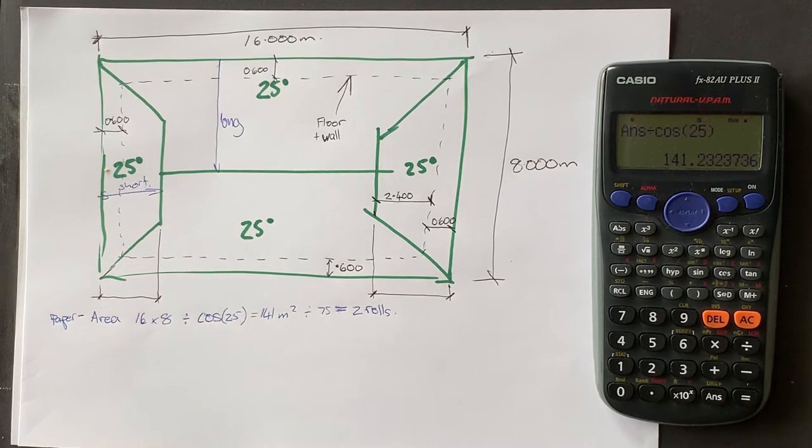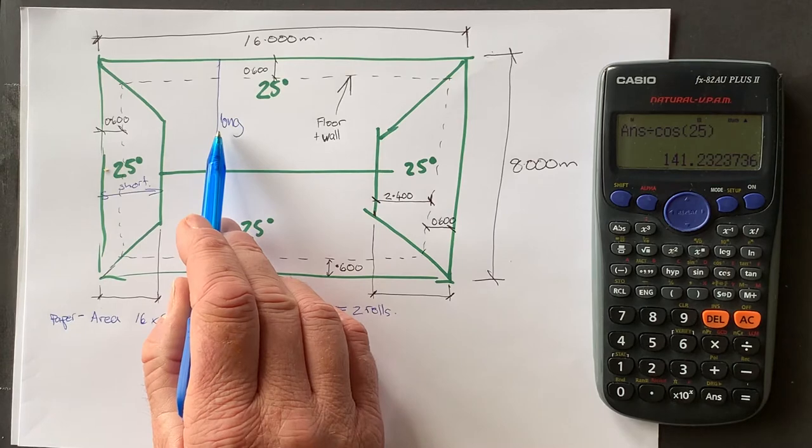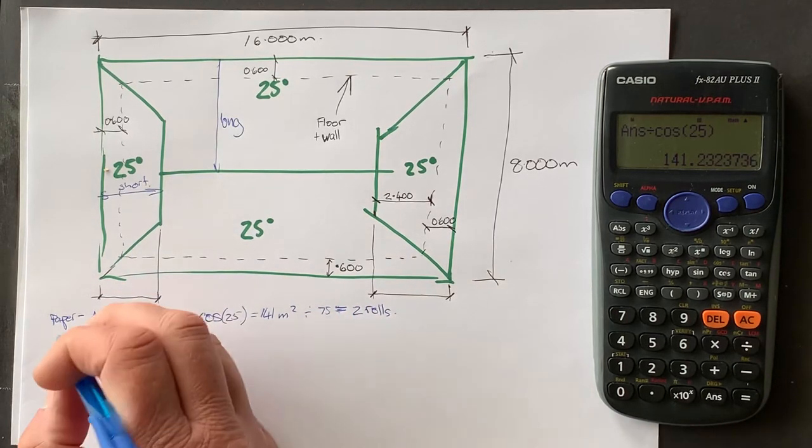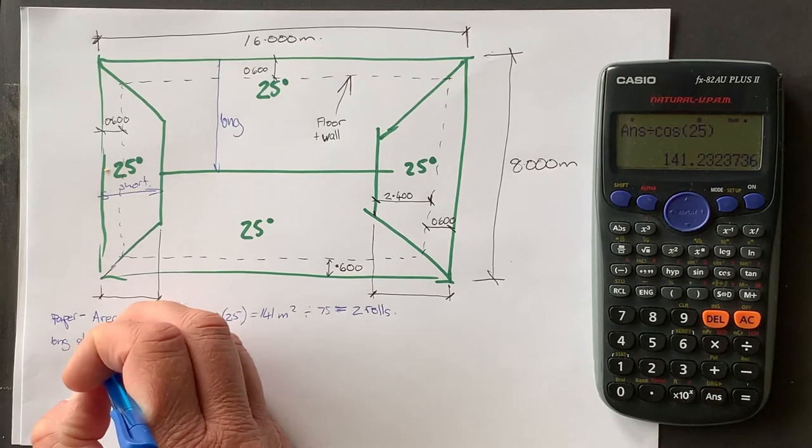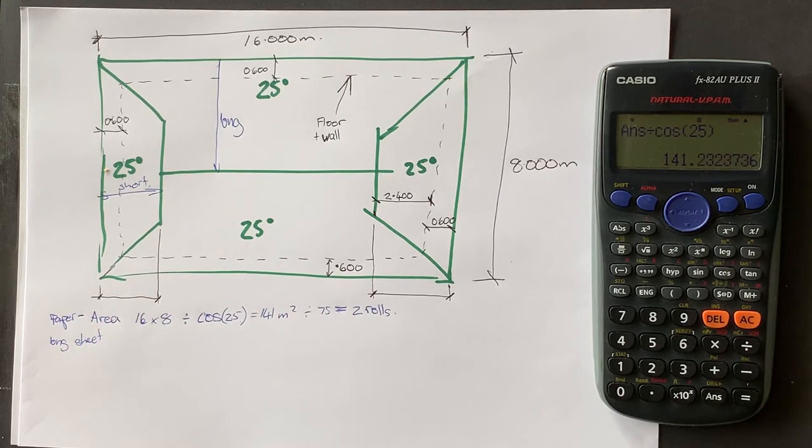The next thing we're going to work out is the length of the long sheet of iron. So the long sheet. Now if you have a look at my other video on lengths of a rafter, you'll see that we started with the run of the roof.